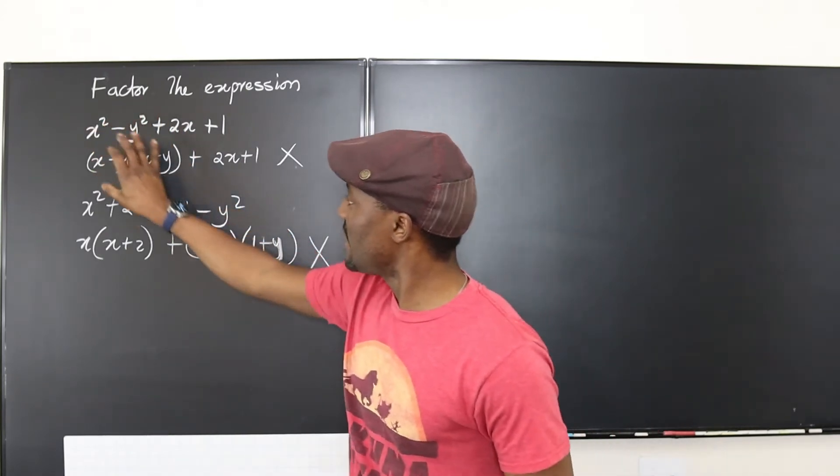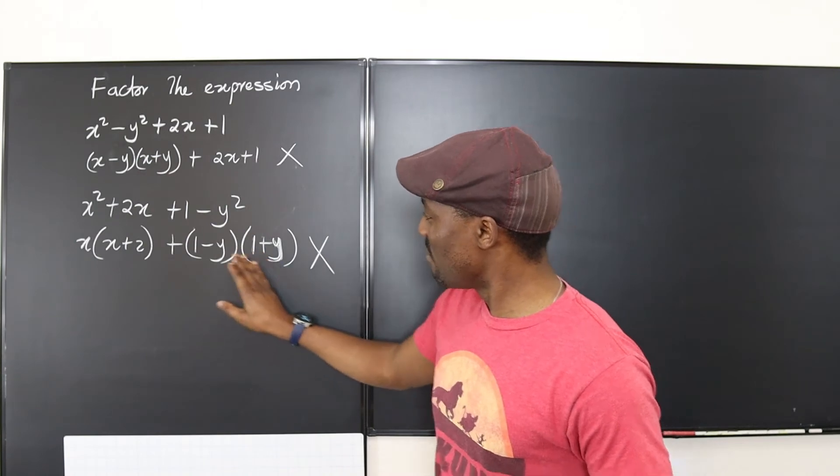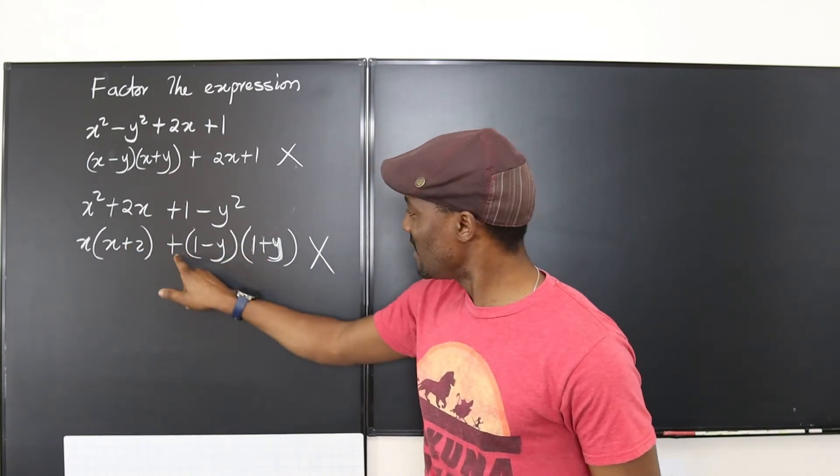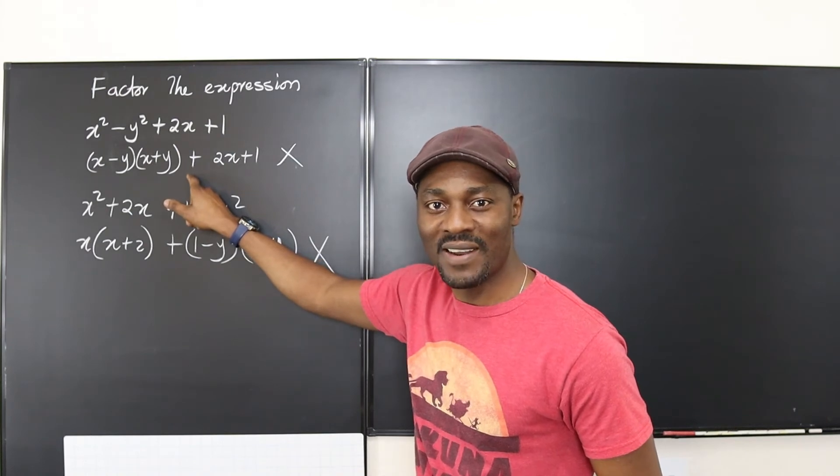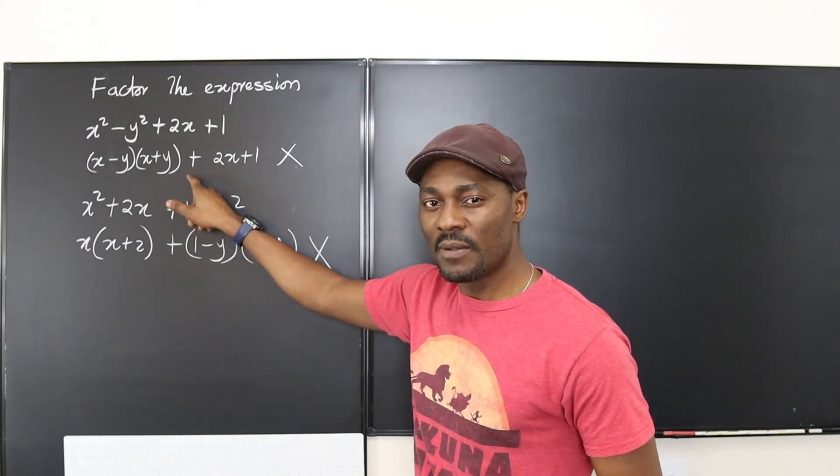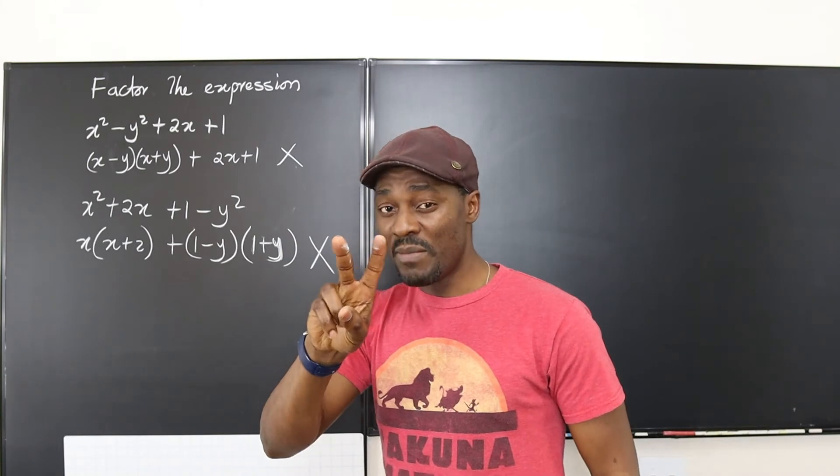You see I have factored using just the basic knowledge that I have and I paired things together, and the pairing appears to not help me. I still have this plus sign—you can't have this when you factor. So what would I do now that I've tried? Maybe I should take three things together.